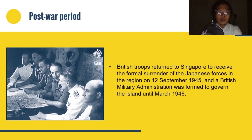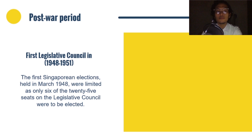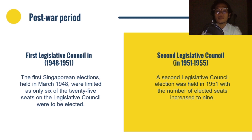The British were prepared to gradually increase self-governance for Singapore and Malaya. On April 1, 1946, the Straits Settlements was dissolved and Singapore became a separate Crown Colony with a civil administration headed by a governor. This led to the foundation of the first legislative council from 1948 to 1951 and the second legislative council from 1951 to 1955.